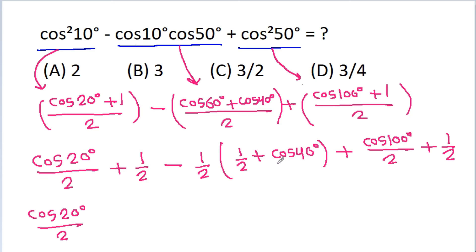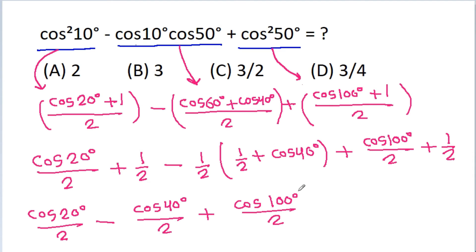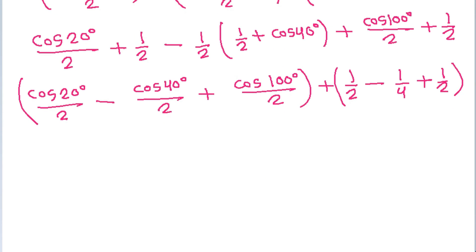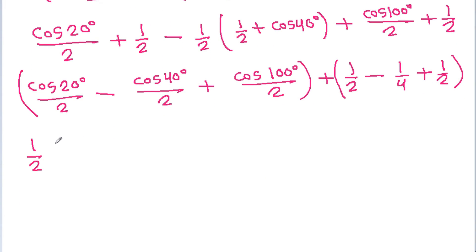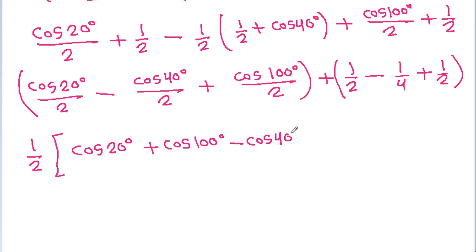Combining all terms: minus (1/2)·cos40° gives -cos40°/2, plus cos100°/2, plus 1/2. Taking 1/2 common we get (1/2)(cos20° + cos100° - cos40°), plus 1/2 + 1/2 - 1/4, which equals (1/2)(cos20° + cos100° - cos40°) + 3/4.